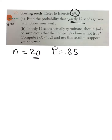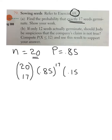The way we set it up is we have 20 seeds. All of the different combinations that you get, 17 out of 20, and the probability that they're going to germinate. Our success rate is 85%, and we want 17 of those to germinate, and then not germinating would be 15%, and we want 3 of those, and then we could do all those calculations.